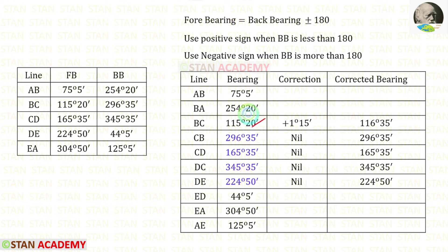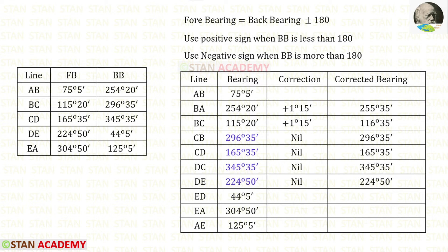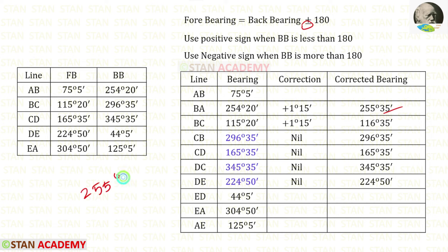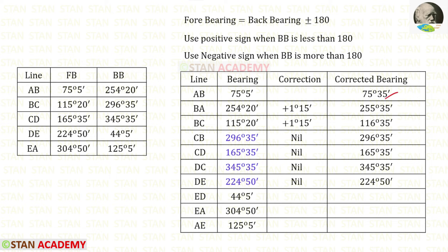We know that both readings for BA and the forebearing of BC are taken from station B, so the same correction of positive 1 degree 15 minutes should be applied to BA as well. Adding the correction gives a corrected bearing for BA of 255 degrees 35 minutes. Since BA is the back bearing of AB, and 255 degrees 35 minutes is more than 180 degrees, we use the negative sign: 255 degrees 35 minutes minus 180 degrees gives us 75 degrees 35 minutes.